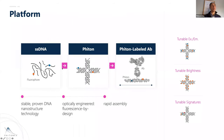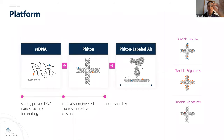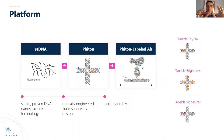It's the phyton structure that enables precise engineering and design of truly new labels. We can take components — dyes not previously used in flow cytometry — put them onto the platform and control their geometry. Since fluorescence resonance energy transfer scales to the square of distance, we can tune that geometry, giving us tunable excitation and emission. With four arms on the phyton structure, we also have the ability to tune brightness. It's an incredibly flexible platform in terms of engineering.